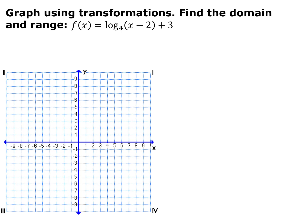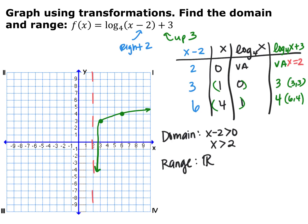Now we have f of x equals log base 4 of x minus 2 plus 3. Graph it using transformations and find the domain and range. This graph has been shifted to the right 2 and up 3. My vertical asymptote is now at x equals 2. The point originally at (1, 0) is now at (3, 3). The point originally at (4, 1) — the base — is now at (6, 4). The domain: x minus 2 must be greater than 0, so x must be greater than 2. The range is all real numbers.